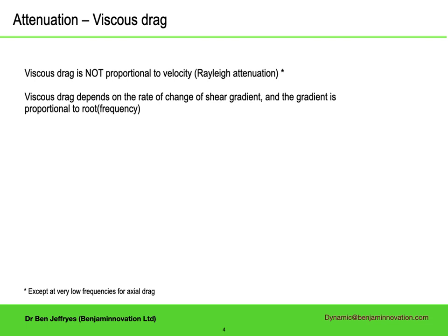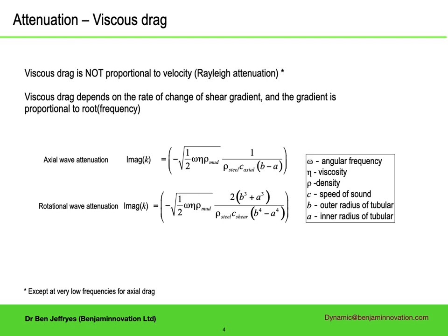Often in numerical models it is assumed that the drag is proportional to the average relative velocity of the steel and the fluid, and this is wrong. This error matters, as drag proportional to relative velocity will result in attenuation that is broadly flat with frequency, which is not what is observed. The drag depends on the rate of change of the shear gradient of the fluid at the steel surface, and this gradient is proportional to the square root of frequency. The consequence is that attenuation grows as the square root of frequency, which is why there are no high frequency resonances extending all the way along the drillstring.